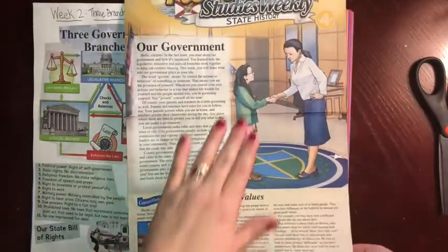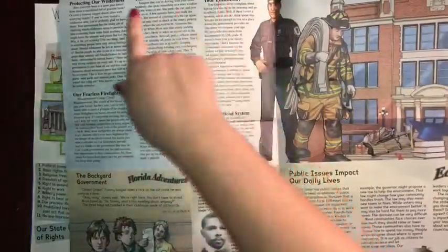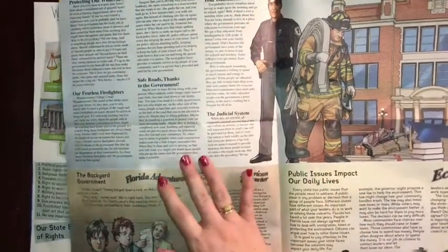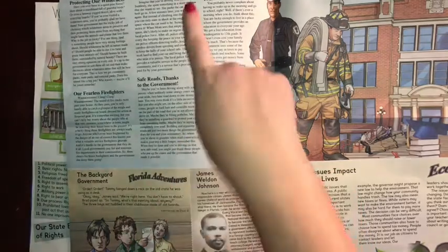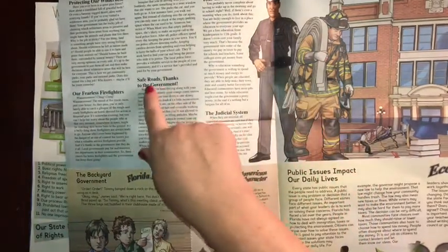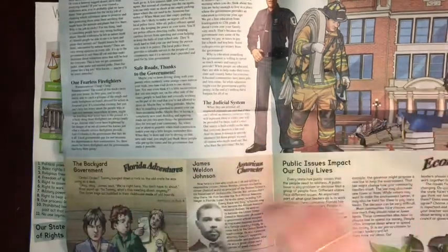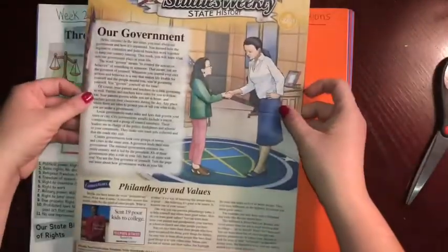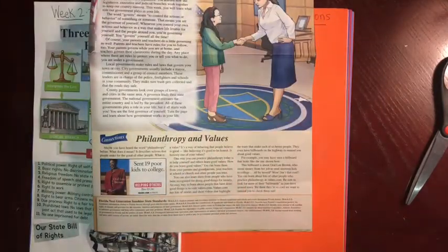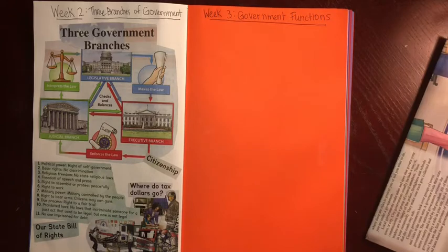As you're deciding what you would like to contribute to your page, remember to think about the focuses we were having this week. We talked about the wilderness and how we're protecting our environment, our civic leaders — people in the firefighters division and police departments — how we continue to create safe roads for everyone to travel on, public education and why that's so important, our judicial system, the legacy of Roxaboxin, James Weldon Johnson, philanthropy and values. Look through and decide what you feel is the most pertinent to this week's learning.